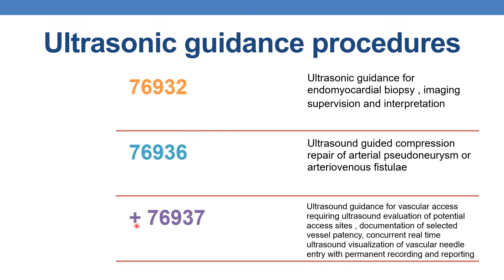The next is plus 76937. The plus symbol indicates it is an add-on code and should not be used alone. Plus 76937 deals with ultrasound guidance for vascular access, requiring ultrasound evaluation of potential access sites, documentation of selected vessel patency, and concurrent real-time ultrasound visualization of the vascular needle entry with permanent recording and reporting.